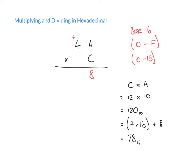The next step: we've multiplied C by A, so next up is to multiply C by 4. C is equivalent to 12, and we're multiplying that by 4. Making a note: C times 4 is the equivalent of 12 times 4, which gives us 48.